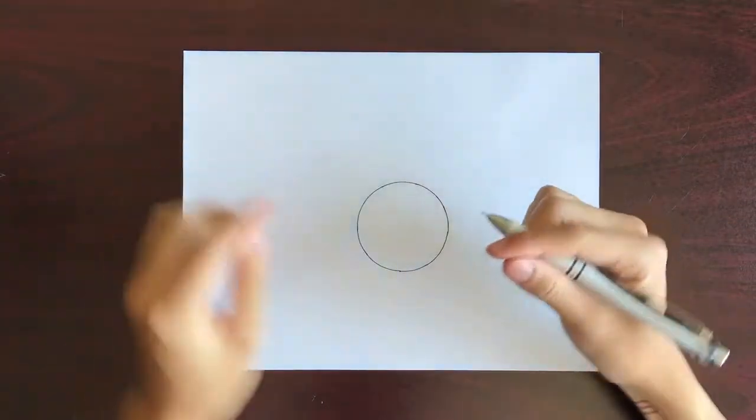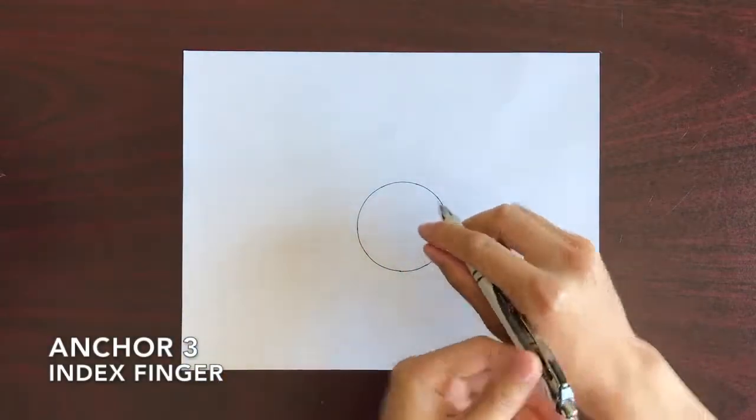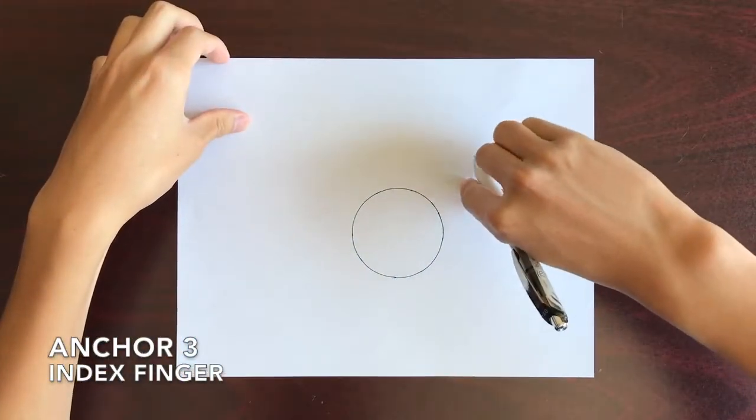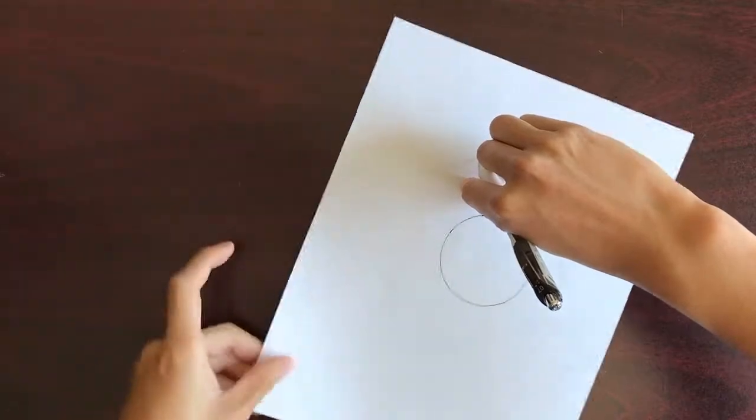We can also use the tip of our index finger. This will make an even smaller circle.